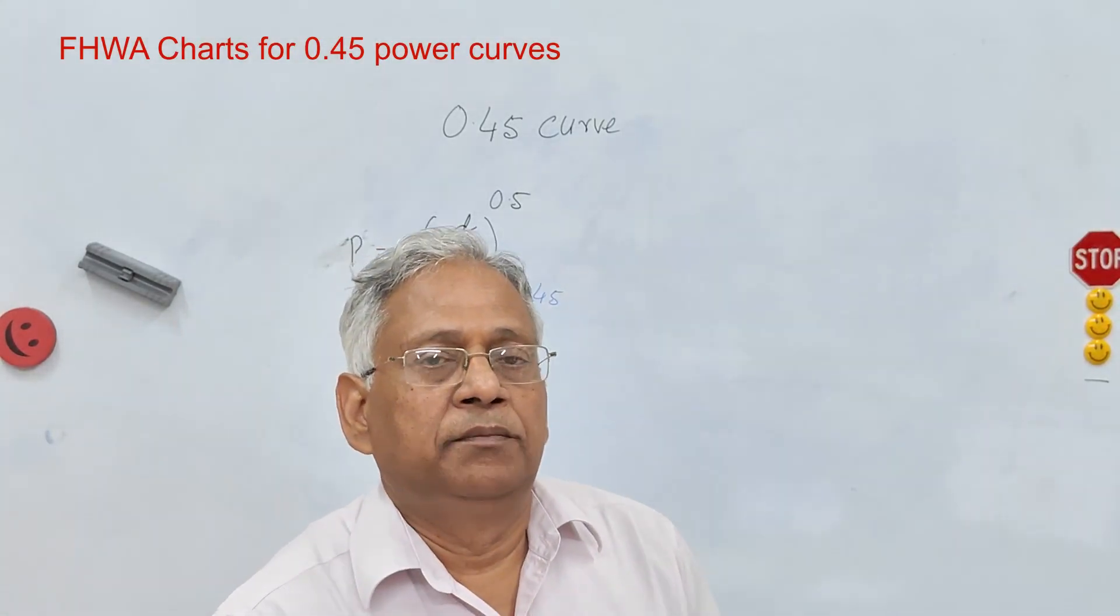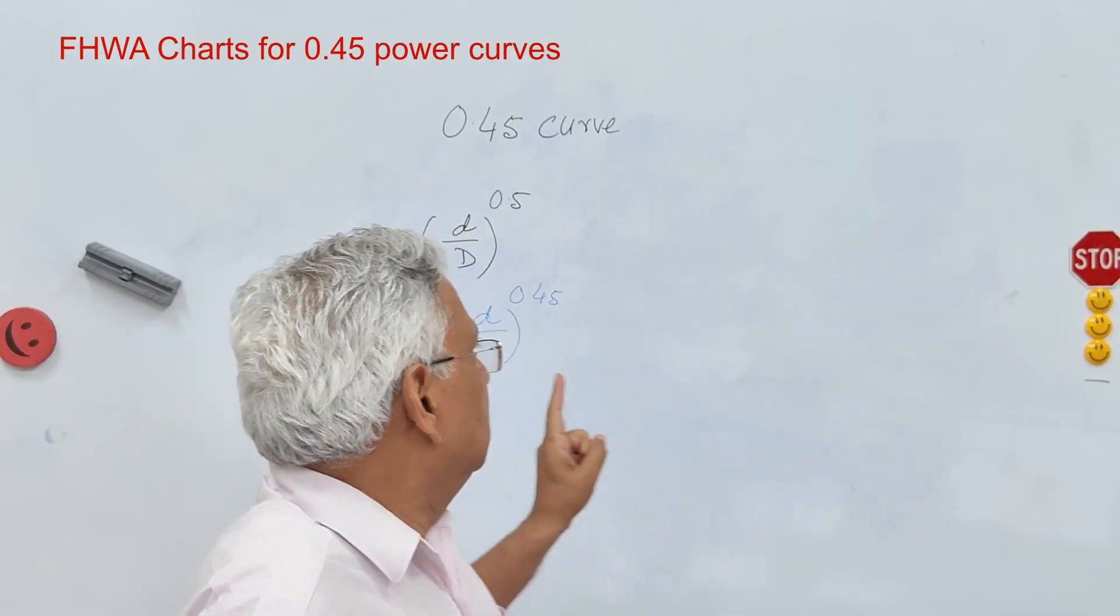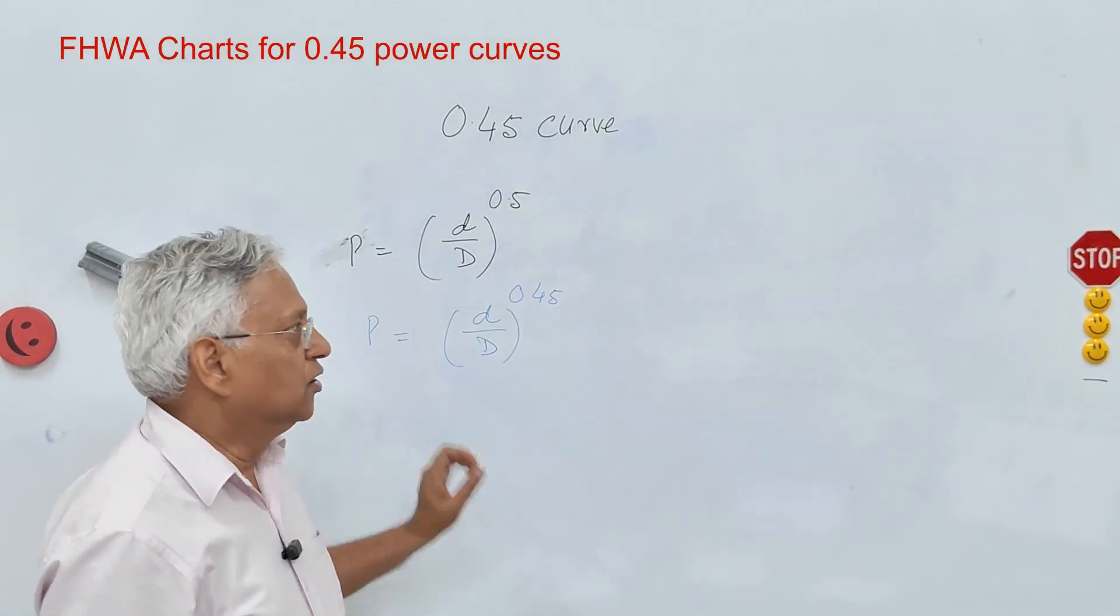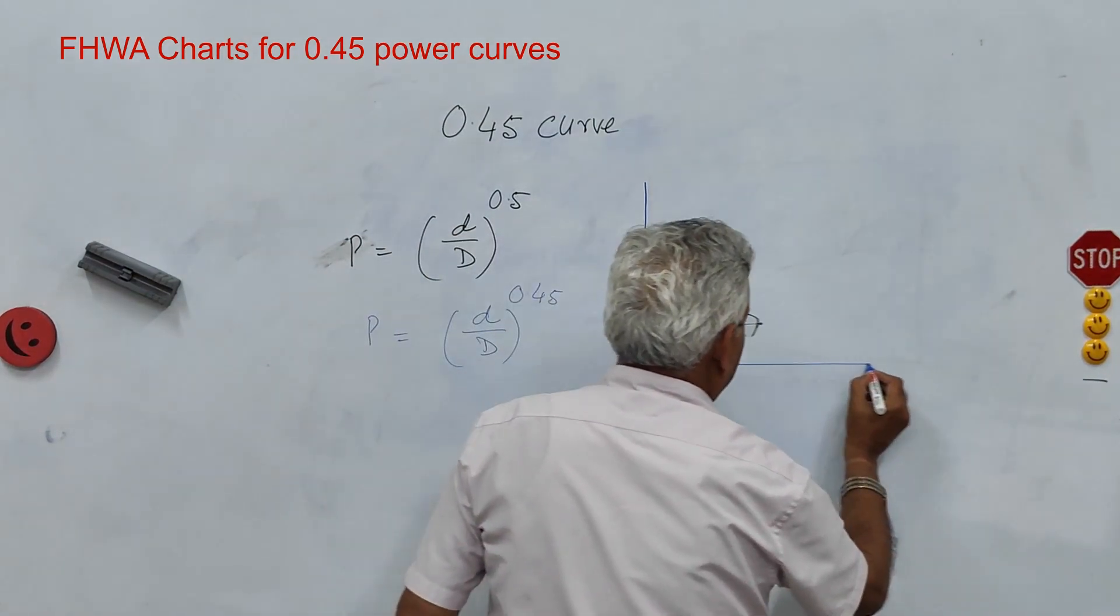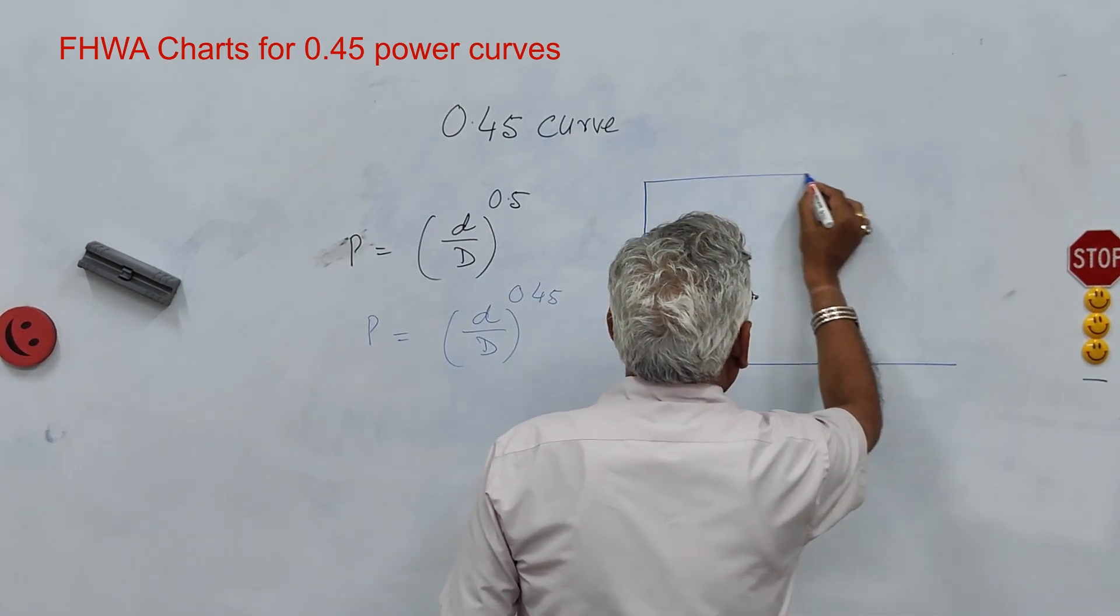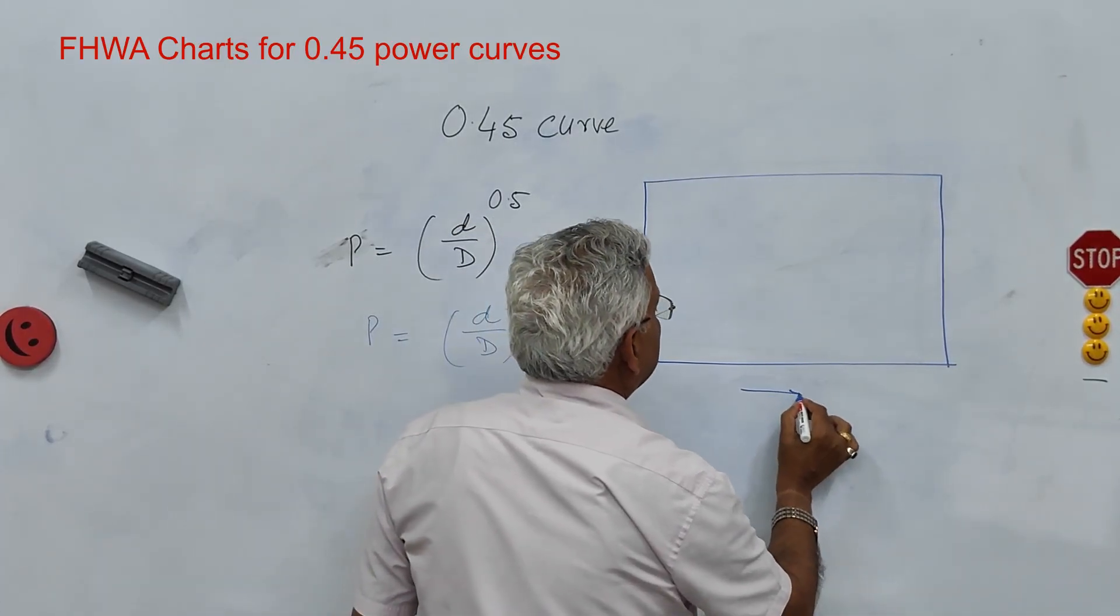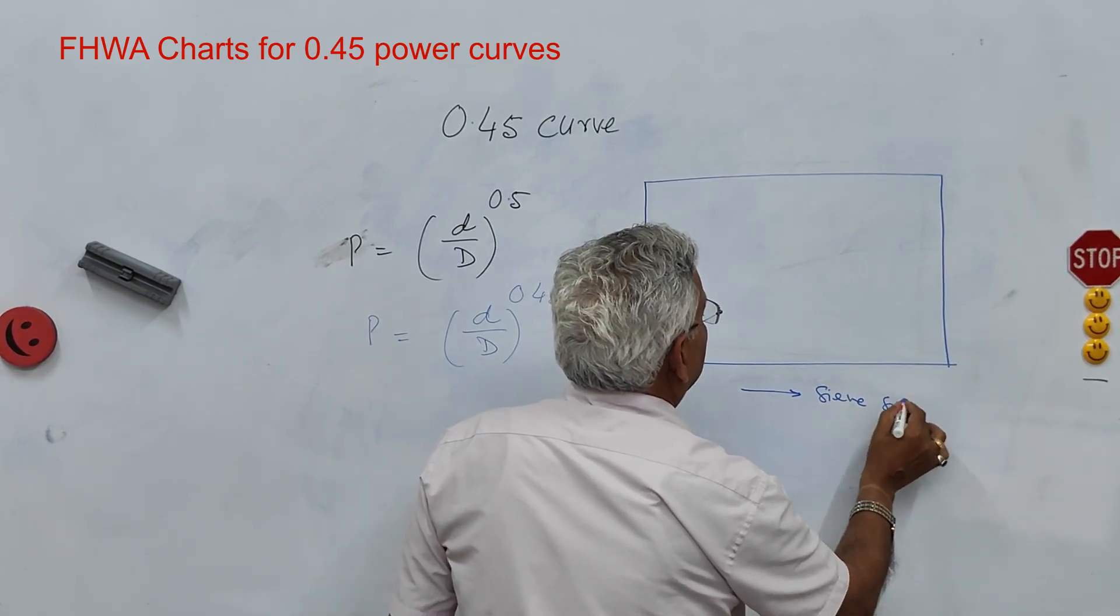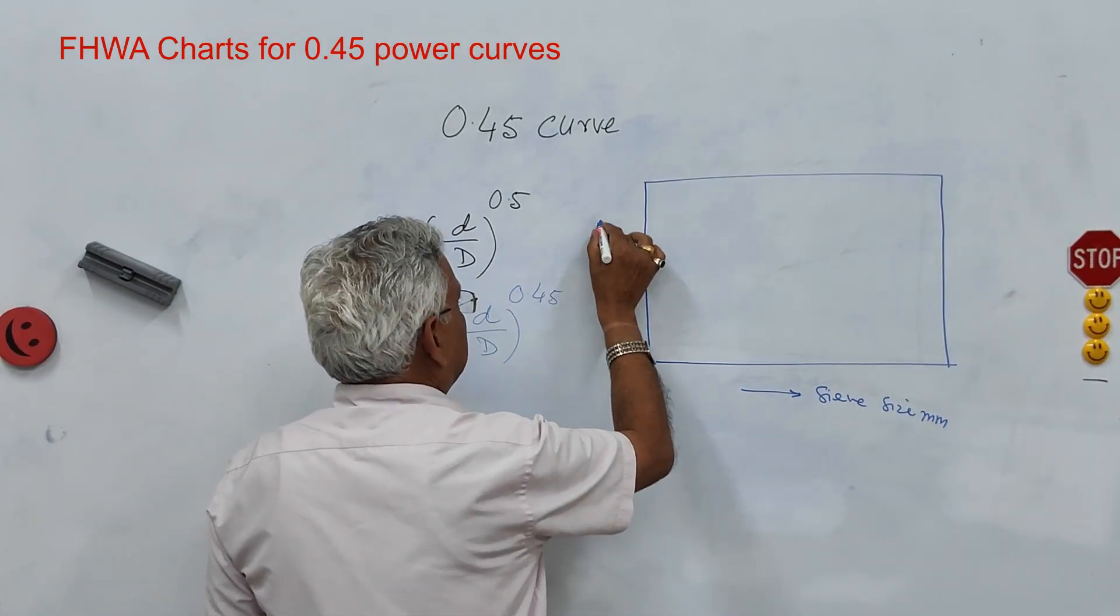And FHWA provided a standard chart where these gradations can be plotted as a straight line. So if you take a graph paper which is a normal graph paper, on x-axis you have sieve size in millimeter, on y-axis you have percent passing.